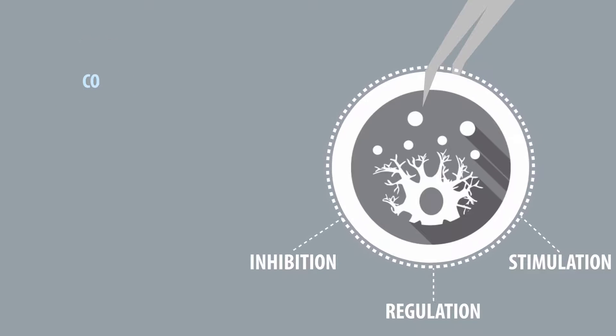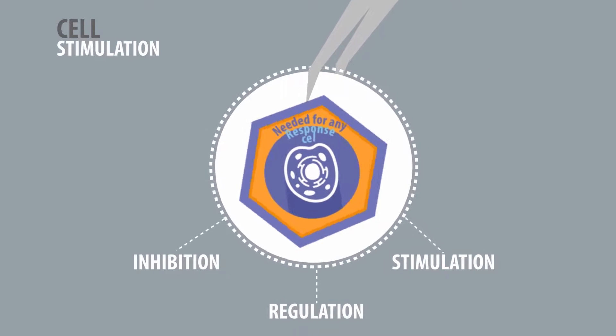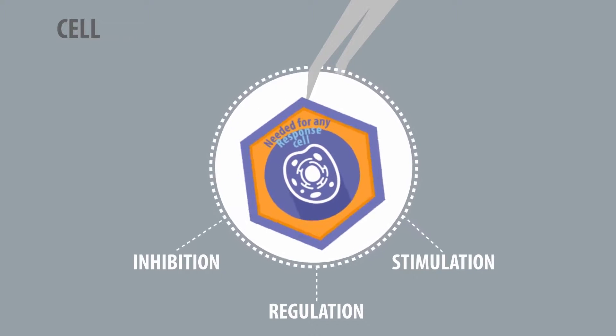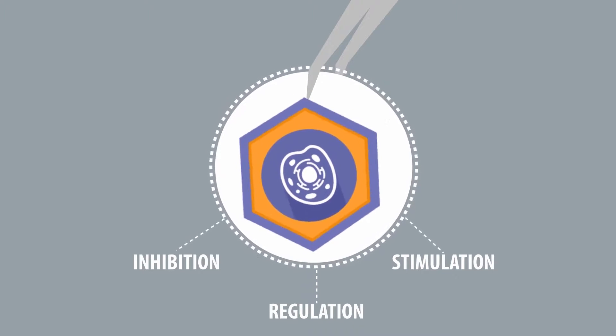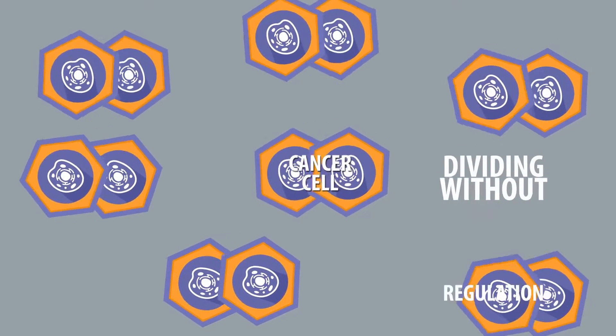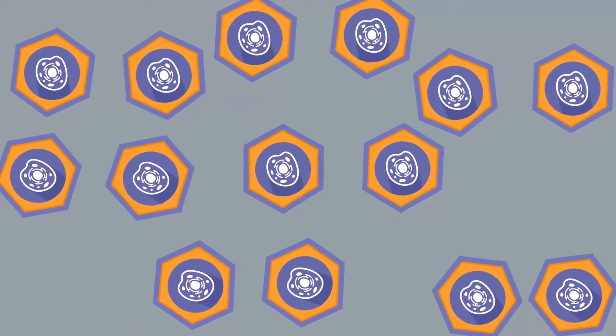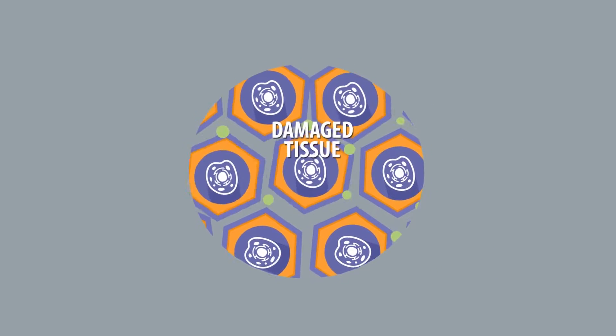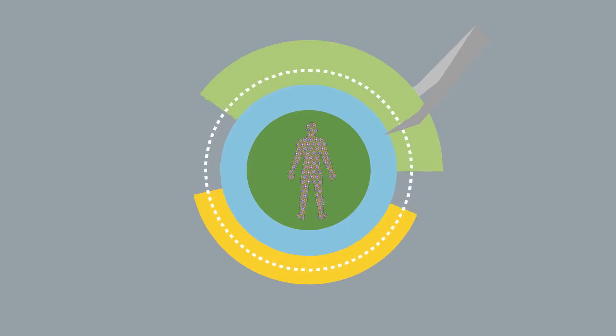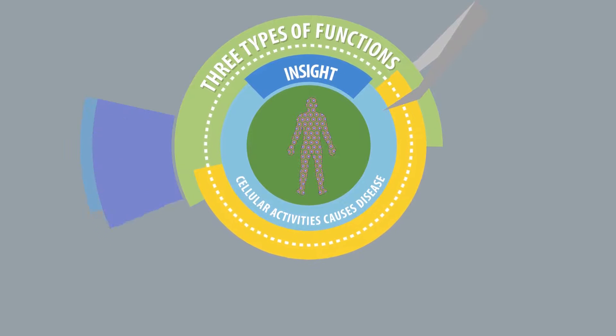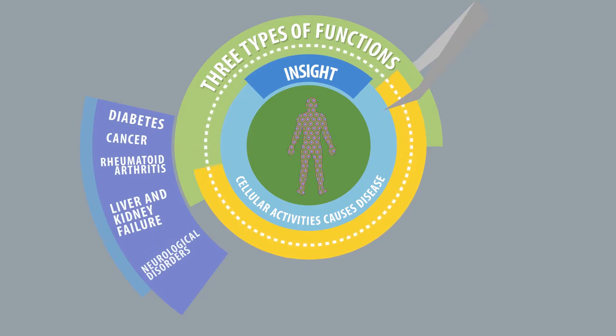Stimulation of the cell is needed for it to be able to generate any responses. When the cell is no longer able to regulate itself, then it is imperative that the function be stimulated, regulated, or completely inhibited in certain cases. For example, when cancer cells are dividing without regulation, the cellular function needs to be completely inhibited. Then the cell needs to stimulate or regulate responses directly in the damaged tissue. The three types of functions that these proteins have in the cell give us insight into the cellular activities that cause diseases such as diabetes, cancer, rheumatoid arthritis, liver and kidney failure, and neurological disorders.